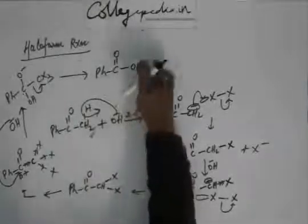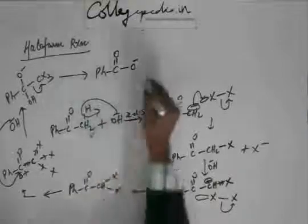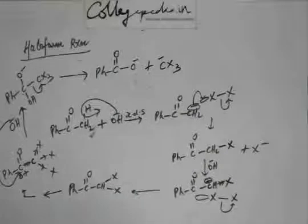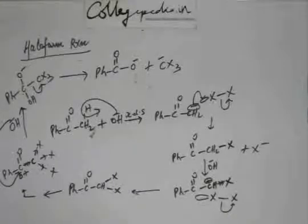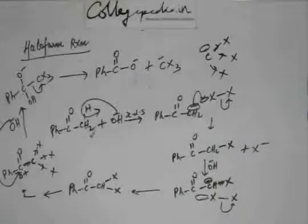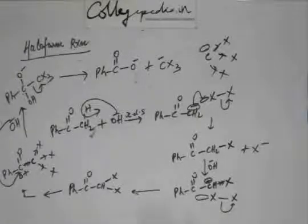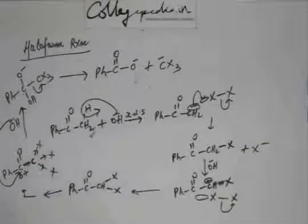CX₃⁻ is a stable leaving group because three halogens are attached to carbon, and halogens have high electronegativity — high negative inductive (-I) effect. Because of the three -I effects of these three groups, the negative charge on carbon is pulled away by these three halogens, decreasing the negative charge density on carbon. So C⁻ is stabilized; CX₃⁻ is stable because of the -I effect. Because it is stable, it can act as a leaving group, and because it can act as a leaving group, the C=O bond can be regenerated.